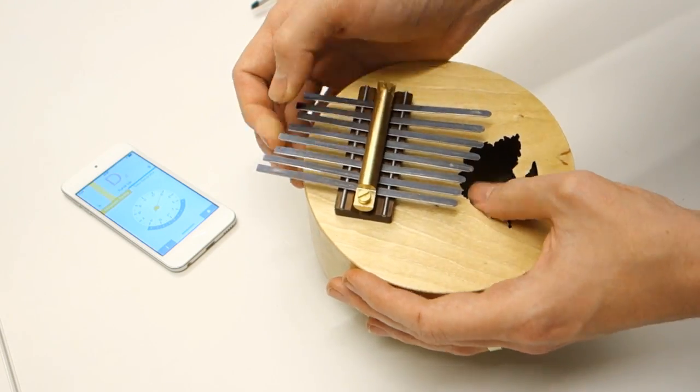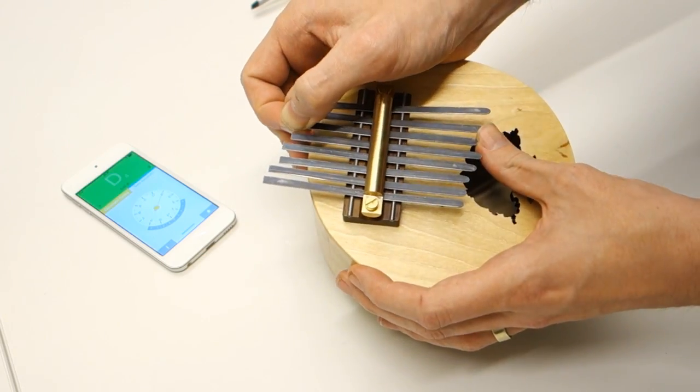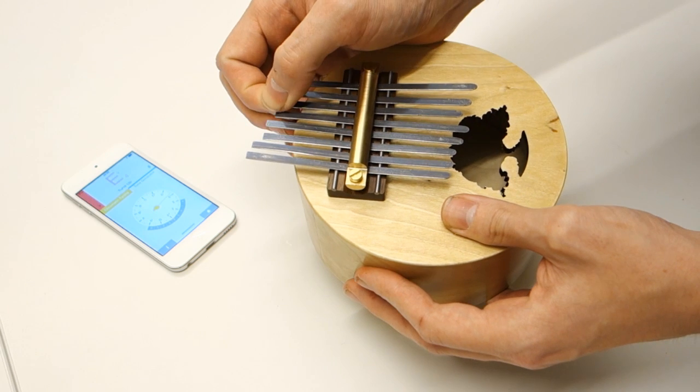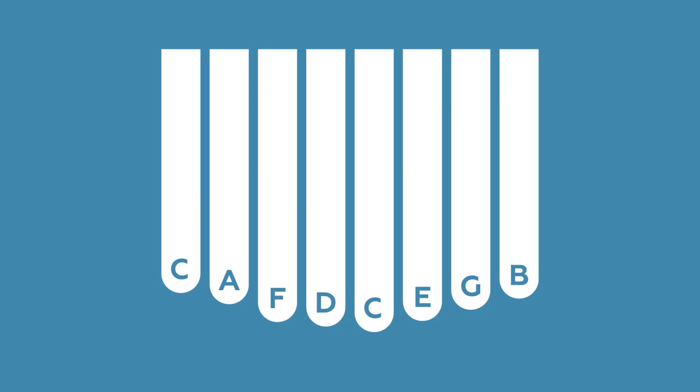There are also many different scales you can choose for tuning your kalimba, and it varies also depending on how many tines you have. For this I chose a fairly easy scale. Since it has 8 tines, a simple octave seemed to work out best.